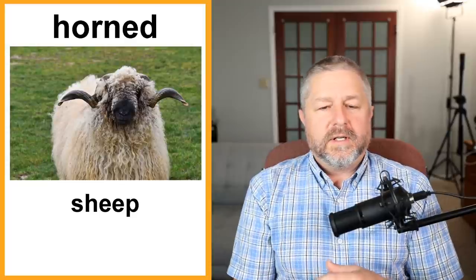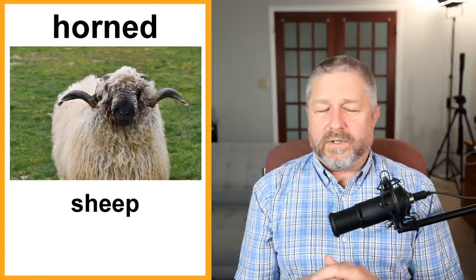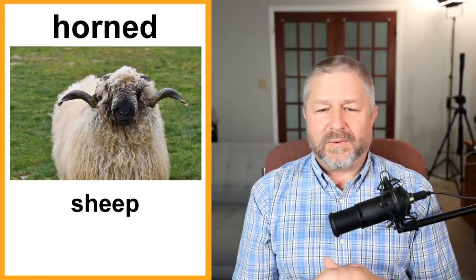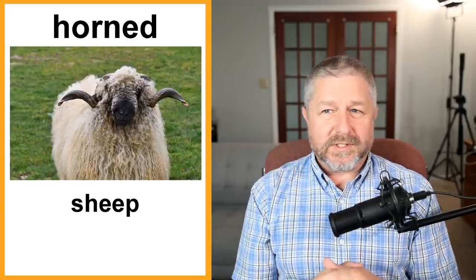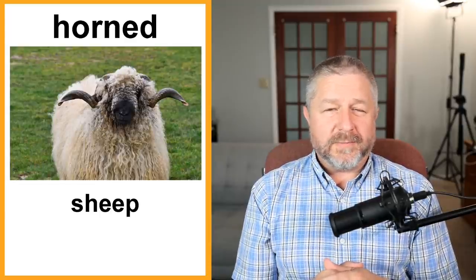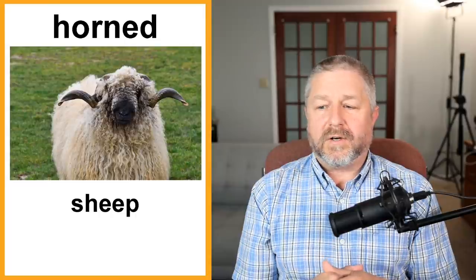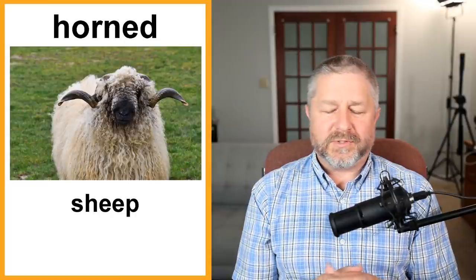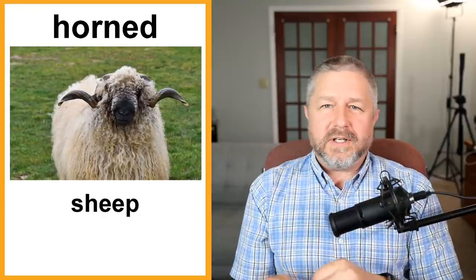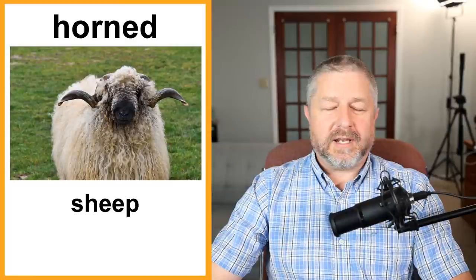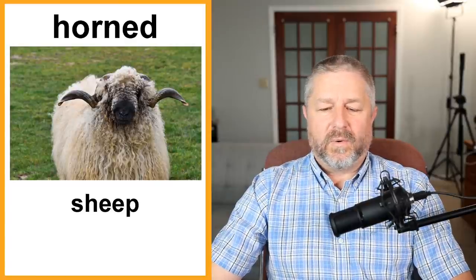Horned. Animals that have horns are called horned. You have horned sheep, goats that have horns, and many other types of animals with horns — we would say they are horned animals. A horned animal is something like a sheep, deer, elk, or moose. We have moose in Canada that also have horns — very, very interesting.